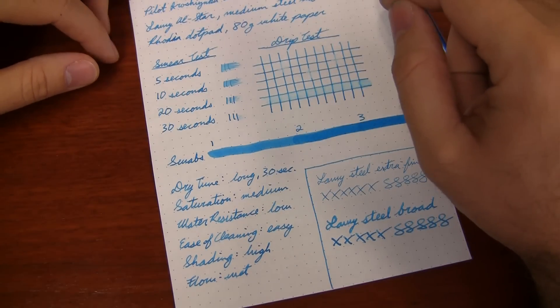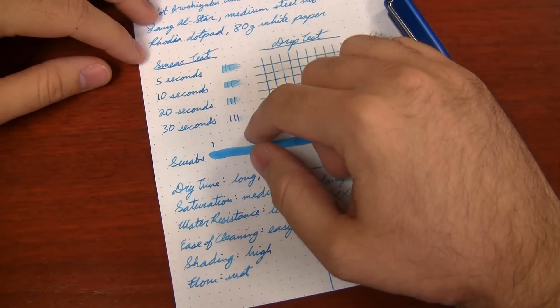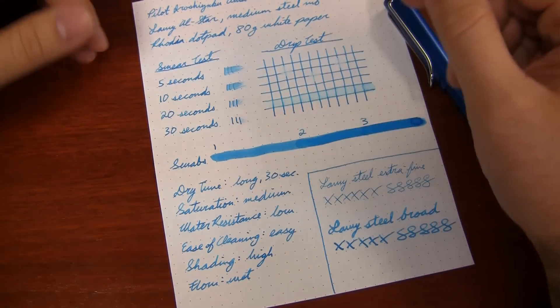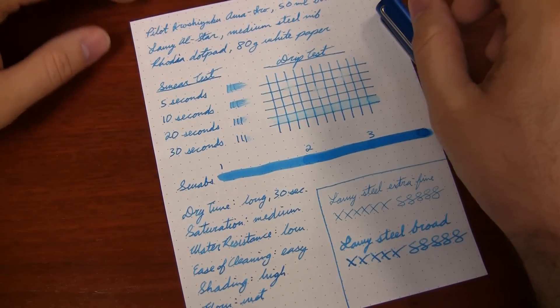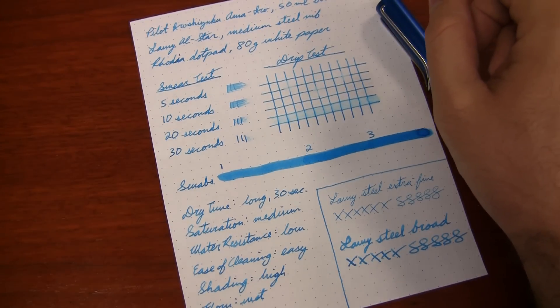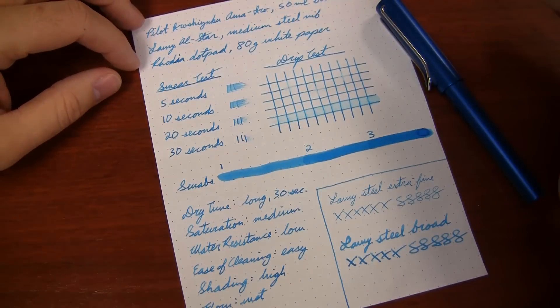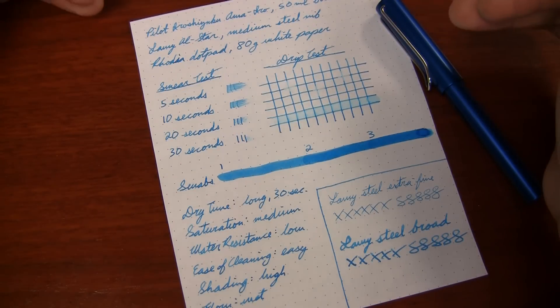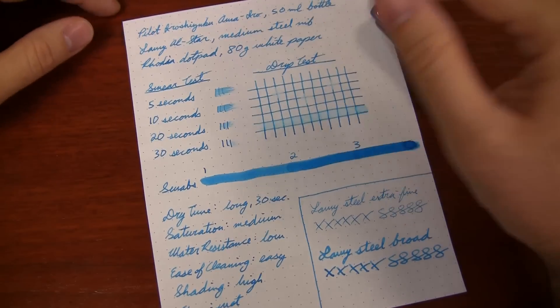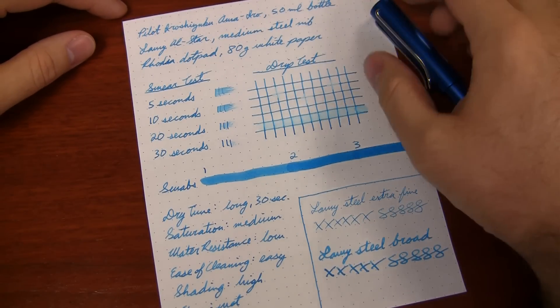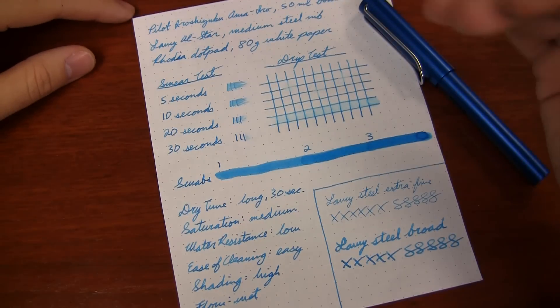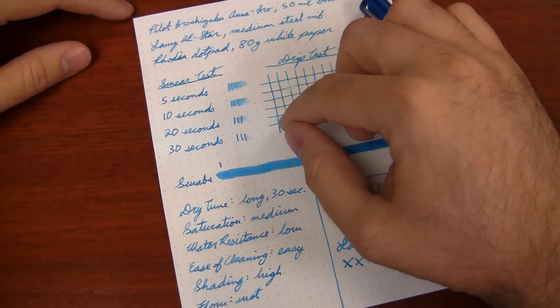The one thing that shocked me the most about this ink was the dry time. Now I've reviewed several other Iroshizukus. I haven't published all my reviews yet. But of all the inks I've reviewed, the one common thing with all the inks is that they dry really fast. Even on Rhodia paper. Well, I didn't find that to be the case with Ama Iro.